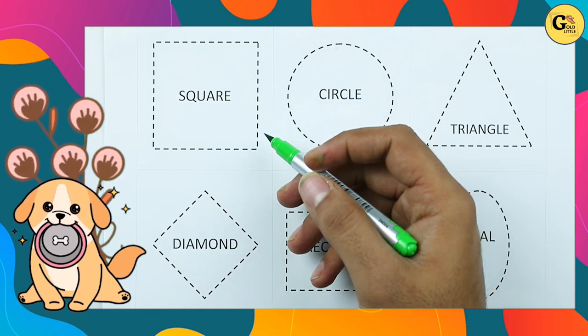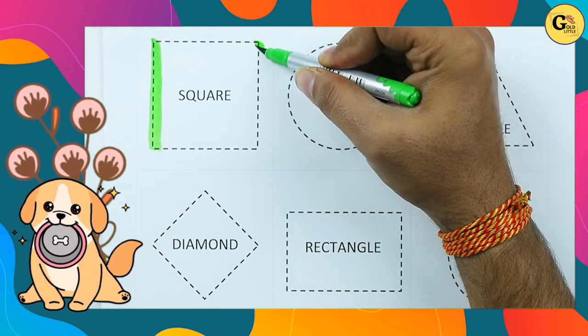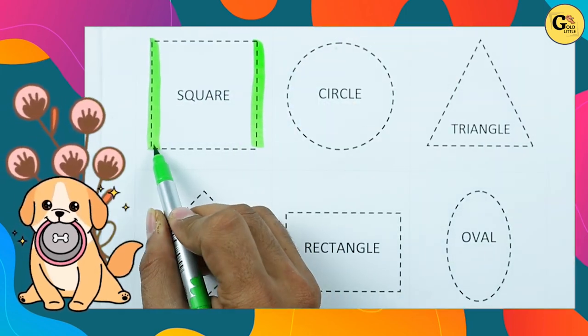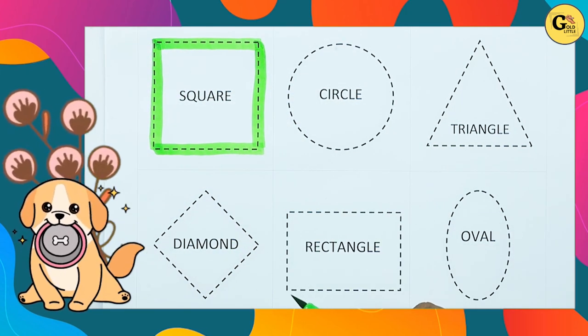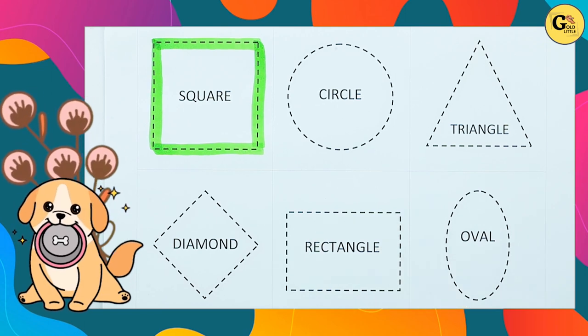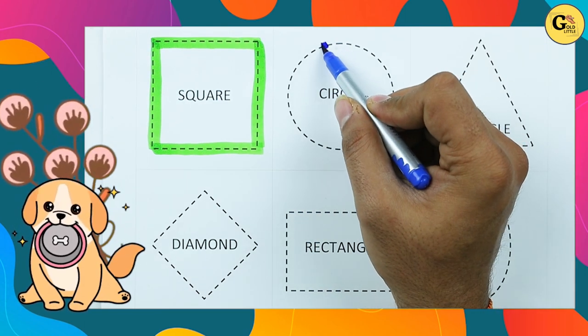It's square. One line, two line, three line, four line, two slipping lines, two standing lines. It's called square with green color.